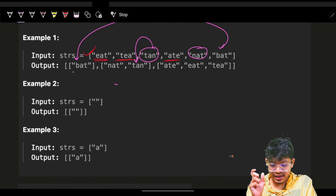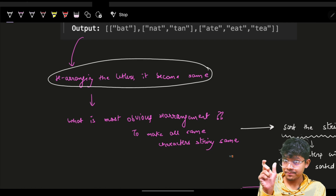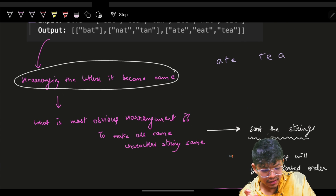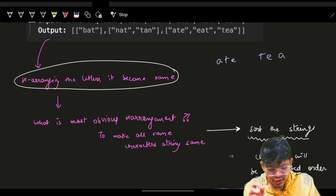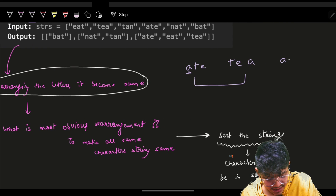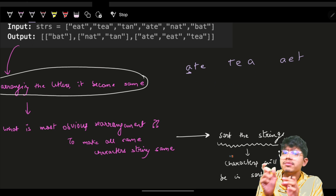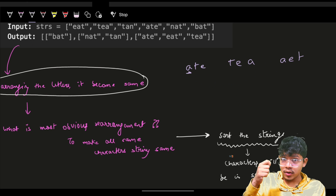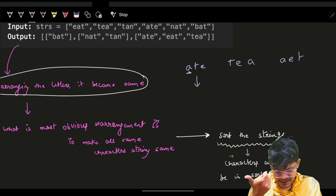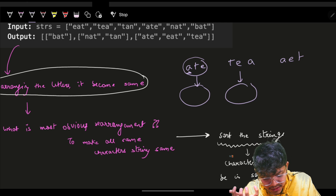The return type is a list of list of strings. The first obvious thing is that we have to rearrange the letters of a string and make them equal — the characters should be equal. If I have 'ate' and 'tea', rearranging and matching character by character is complex. Rather, I can do something smarter: make an output string such that for every anagram the output string is the same.